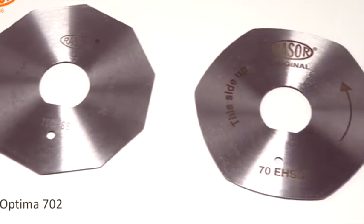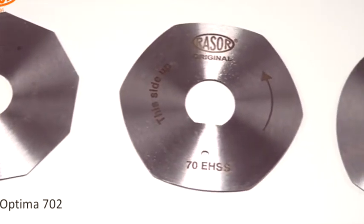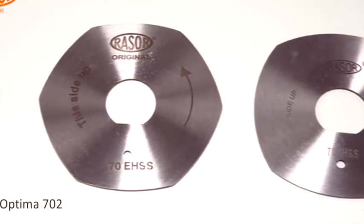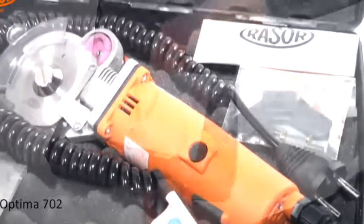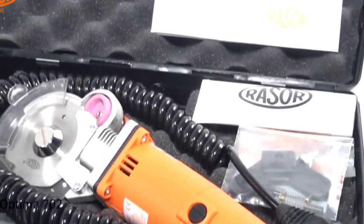Blades in HSS steel and full hard metal quality with different shapes convert the Razor Optima 702 into a universal tool for all industrial cutting requests in a sturdy, padded and handy carrying case.